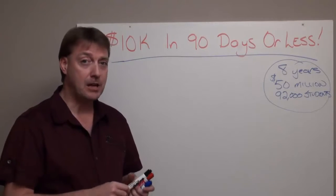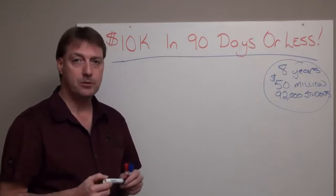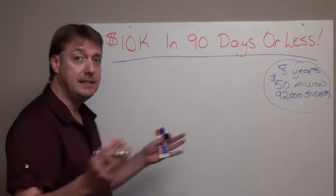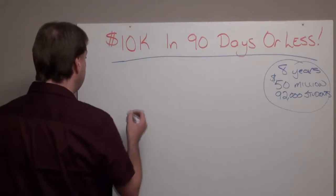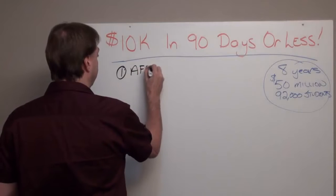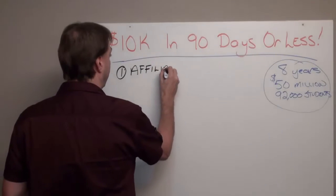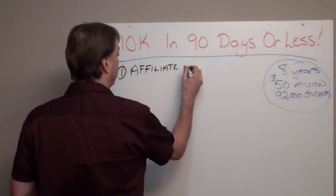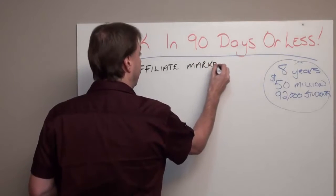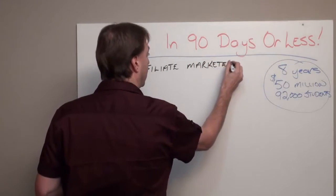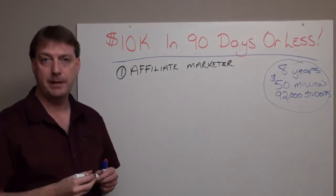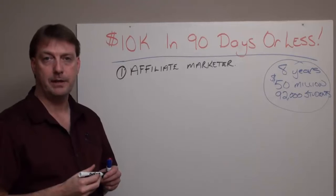That answer is also very simple. There are two ways. The first and foremost, easiest way is to become an affiliate marketer. The very easiest way to start earning an income online is to become an affiliate marketer and get into affiliate marketing.